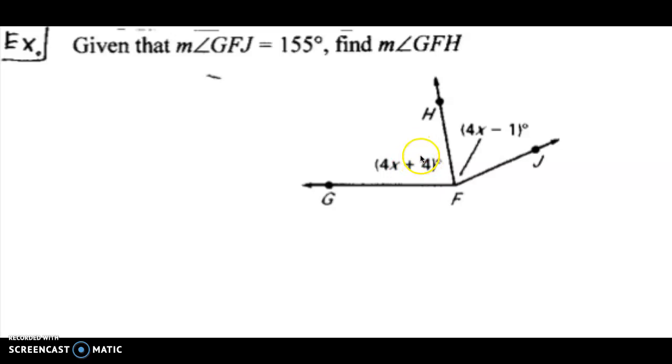Angle GFH, all of it is over here. None of angle HFJ is inside of that. That's the idea of point H being on the inside of angle GFJ. Basically what you have is just two angles right next to each other sharing a ray.